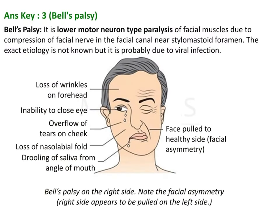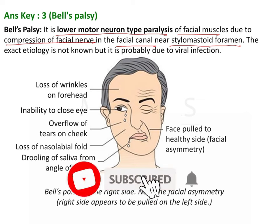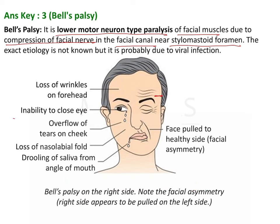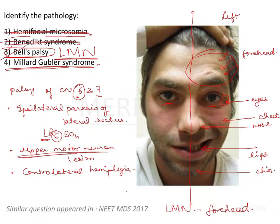Since the forehead is affected in the image, the answer is Bell's palsy — a lower motor neuron type of paralysis of the facial muscles due to compression of the facial nerve in the facial canal near the stylomastoid foramen. The exact etiology is unknown but there is a viral predilection. Classic features include wrinkling on one side, inability to close the eye, overflow of tears, loss of nasolabial fold, drooling of saliva from the angle of the mouth, and the face appearing pulled toward the healthy side — all identifiable in this image.